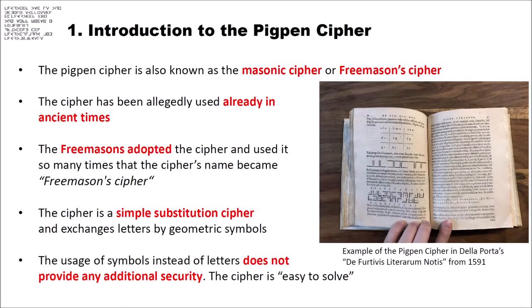The Pigpen cipher is also known as the Masonic or Freemason cipher. The cipher has been allegedly used already in ancient times, and the Freemasons adopted it and used it so many times that the cipher's name became Freemason cipher. The cipher itself is a simple substitution cipher and exchanges letters by geometric symbols. The usage of symbols instead of letters does not provide any additional security, so you can say that the cipher is easy to solve. On the right side of the screen, you can see an example from Giambattista della Porta's book from 1591, so the cipher is very old — even older than this book.